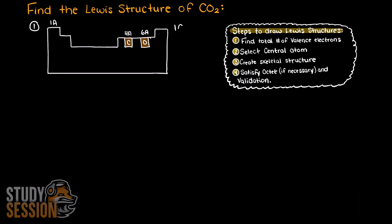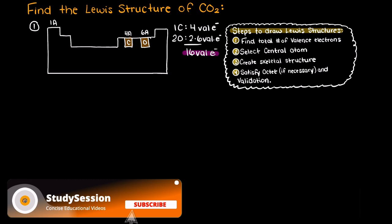Therefore, oxygen being in group 6a will have 6 valence electrons, and carbon being in group 4a will have 4 valence electrons. Therefore, our compound in total will have 16 valence electrons.